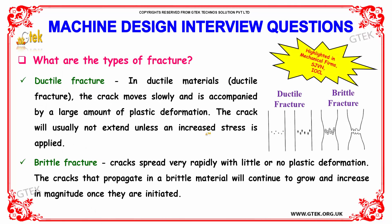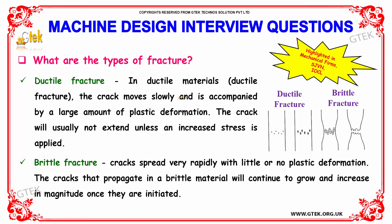What are the types of fracture? The types of fracture are ductile fracture and brittle fracture. In ductile materials, the crack moves slowly and is accompanied by a large amount of plastic deformation; the crack will usually not extend unless an increased stress is supplied. In brittle fracture, cracks tend to spread very rapidly with little or no plastic deformation, and will continue to grow and increase in magnitude once initiated.